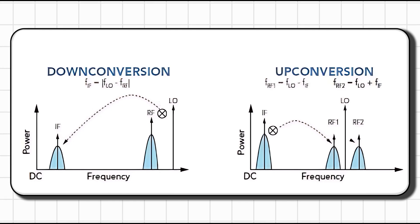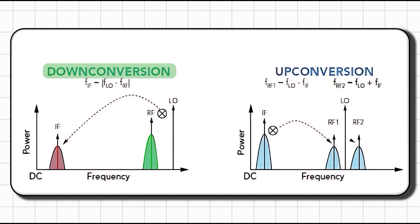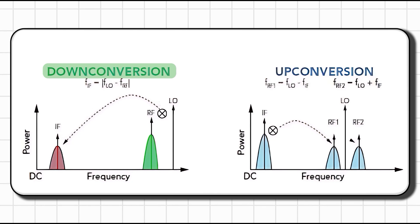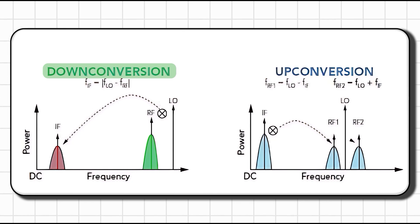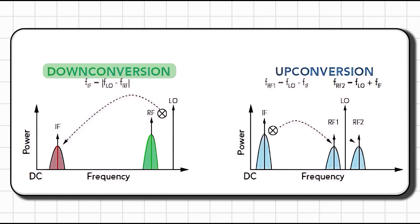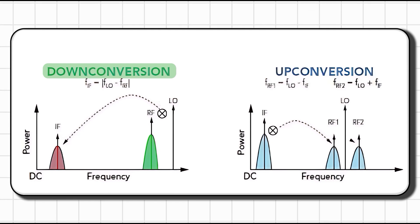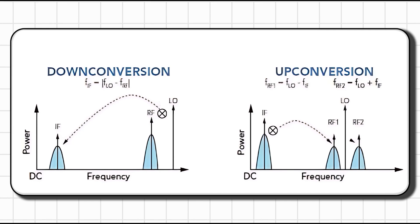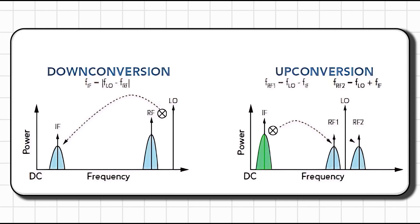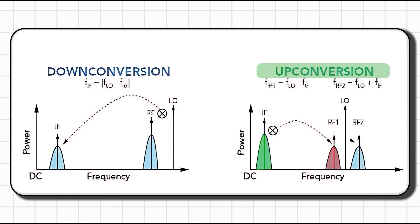If we want to produce an output frequency that is lower than the input RF frequency, it is called down conversion — the input frequency from the antenna is higher than the desired output frequency of the mixer. Similarly, if we want to produce an output signal whose frequency is higher than the input RF frequency, we call it up conversion.